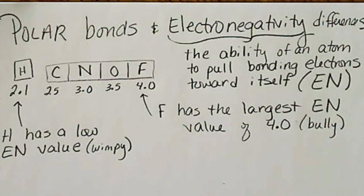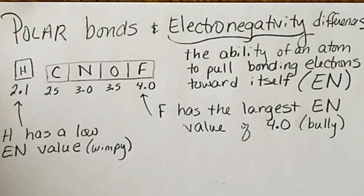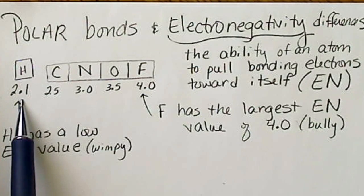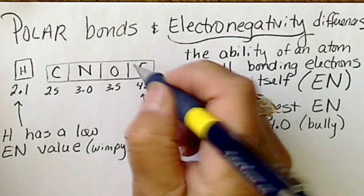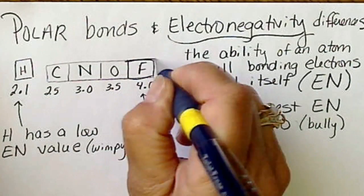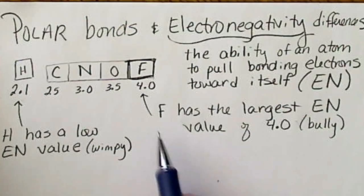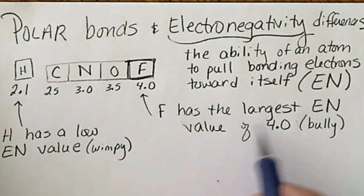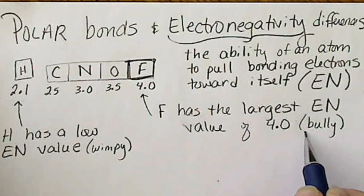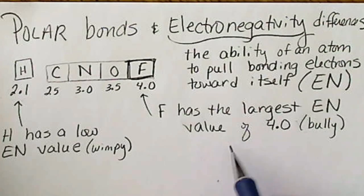And your book has values listed in a table. So hydrogen has an electronegativity of 2.1, that's fairly small compared to fluorine. Fluorine's electronegativity value is 4.0 and that's the highest value on the electronegativity chart. So fluorine is, I describe fluorine as a bully. It does not share electrons equally.